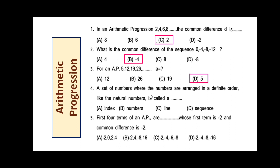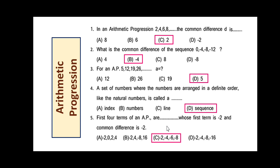A set of numbers where the numbers are arranged in a definite order, like the natural numbers, is nothing but a sequence. The first four terms of an AP whose first term is -2 and common difference is 2: the result is option C — -2, -4, -6, -8 — and these are the first four terms.